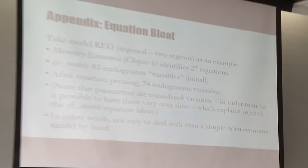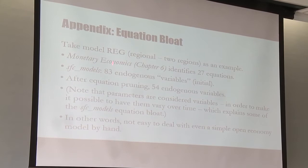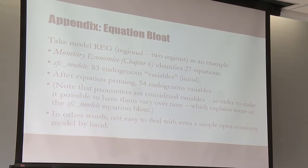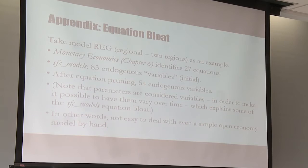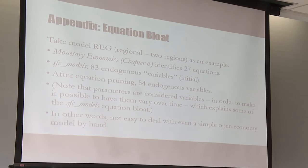One thing to point out: a two-country model for monetary economics — Godley-Lavoie count 27 equations in theirs, but under my system there are 83 equations, because I count parameters as endogenous variables since they can change in the time series. The simplest possible two-country model has that many equations — something you definitely don't want to do by hand. This is why the package is valuable: all the accounting is done for you automatically.